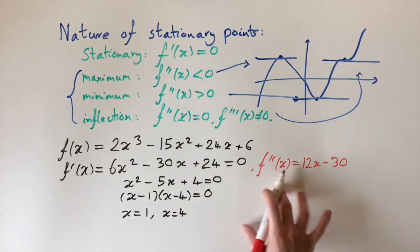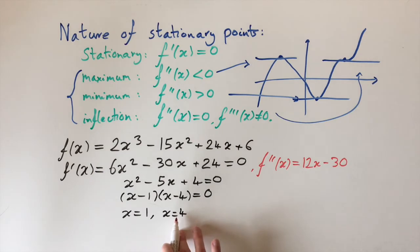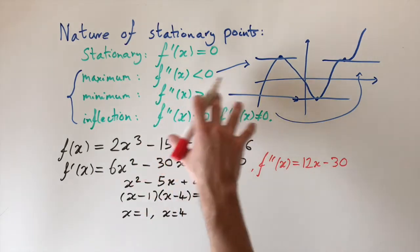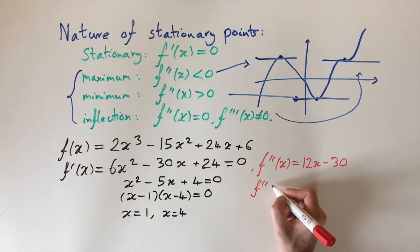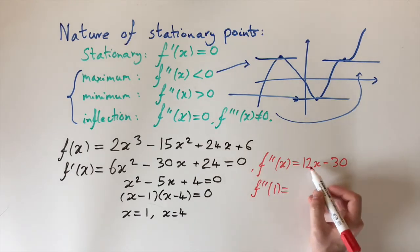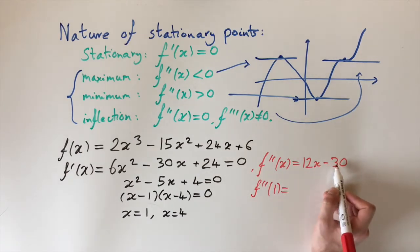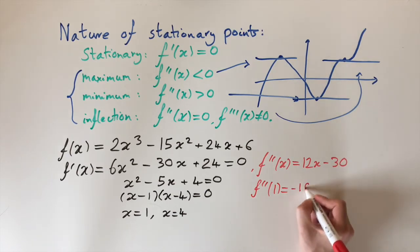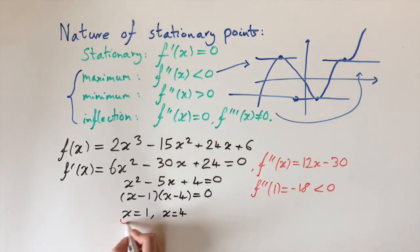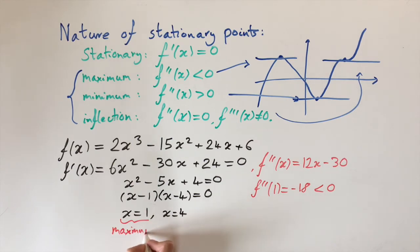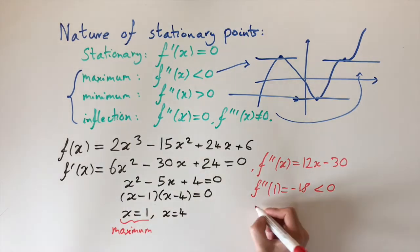We just need to evaluate the second derivative at these points and see if it's positive, negative, or equal to zero. Starting with x = 1: f″(1) = 12(1) − 30 = 12 − 30 = −18. This is negative, which tells us that x = 1 is actually a maximum point — a local maximum.